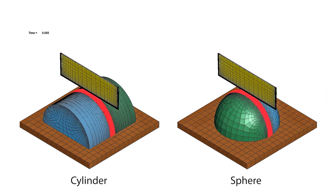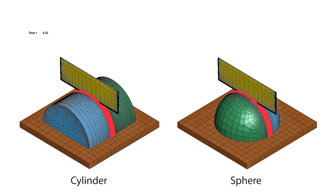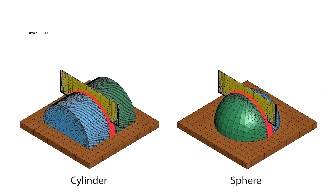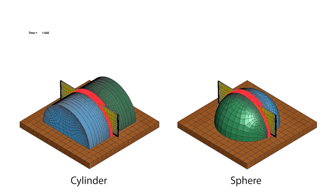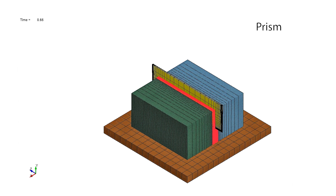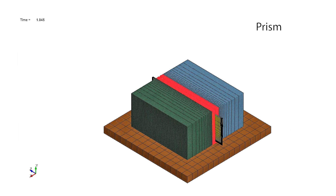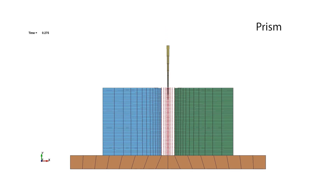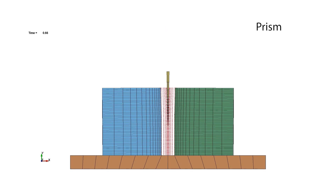We generate ground truth cutting data in a commercial simulator, which allows us to precisely control the experimental setup, such as shape and material properties. Given such data, we can also leverage the nodal displacement field trajectories as an additional ground truth signal.